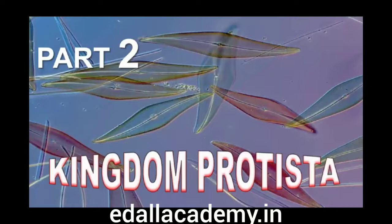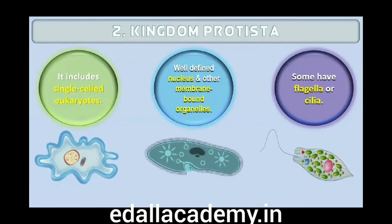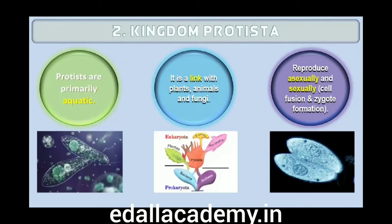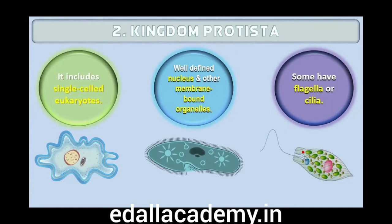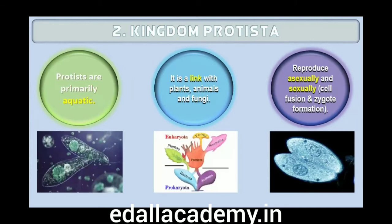2.2 Kingdom Protista. All single-cell eukaryotes are placed under Protista, but the boundaries of this kingdom are not well defined. What may be a photosynthetic protistan to one biologist may be a plant to another. In this book we include chrysophytes, dinoflagellates, euglenoids, slime molds and protozoans under Protista. Members of Protista are primarily aquatic. This kingdom forms a link with the others dealing with plants, animals and fungi. Being eukaryotes, the protistan cell body contains a well-defined nucleus and other membrane-bound organelles. Some have flagella or cilia. Protists reproduce asexually and sexually by a process involving cell fusion and zygote formation.